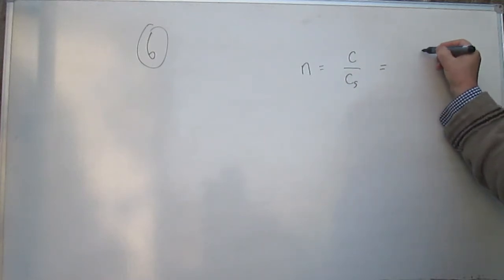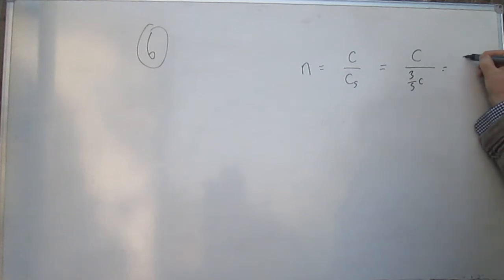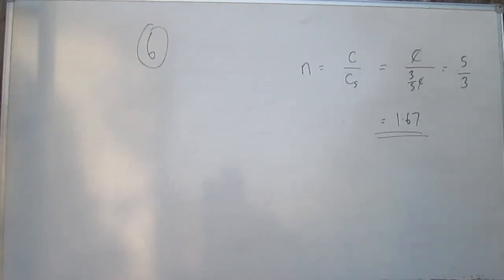So that means that that's equal to c over 3 fifths of c, which, obviously, if you work it out, just comes to 5 over 3, because the c's cancel. So it's 1 over 3 fifths, which is 1.67, is the answer, which is d.